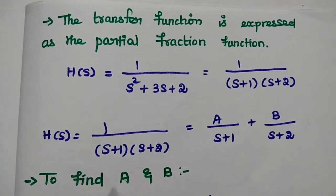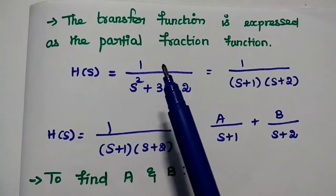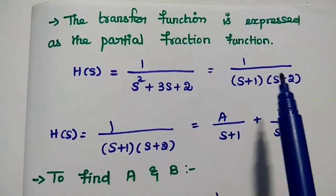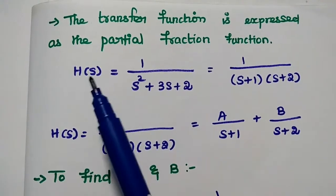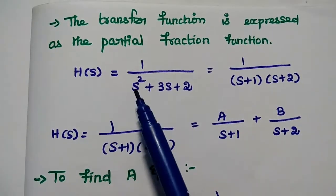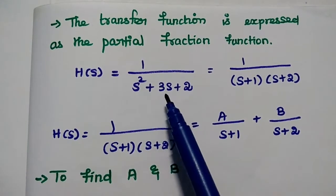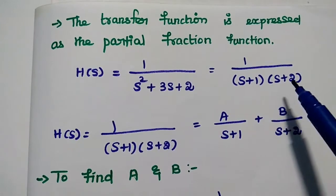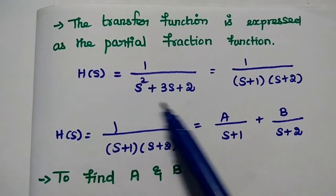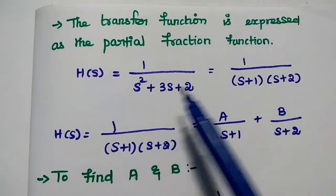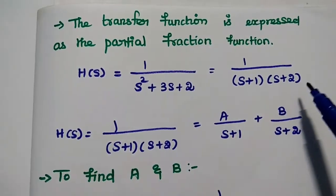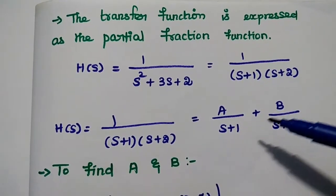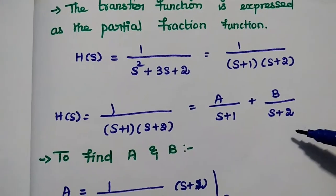After getting the transfer function, we represent it using partial fractions. H(s) equals 1 by s squared plus 3s plus 2, which can be written as 1 divided by (s plus 1)(s plus 2). The roots of the denominator are s plus 1 and s plus 2, so this can be written as A divided by (s plus 1) plus B divided by (s plus 2).